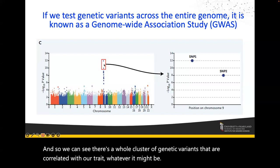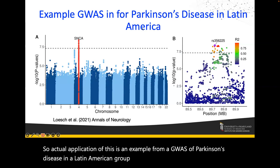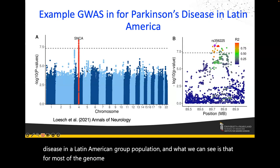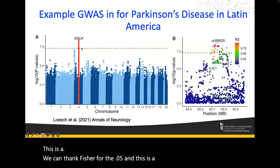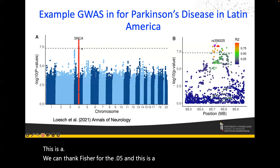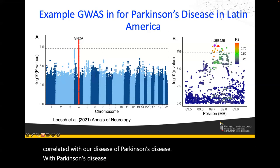An actual application: this is an example from a GWAS of Parkinson's disease in a Latin American population. For most of the genome we see just noise, but at a couple of places we see really strong evidence of association. This is what's known as genome-wide significant — a threshold of around 10 to the negative seven or eight. Here, the SNCA gene has many variants that are correlated with Parkinson's disease.